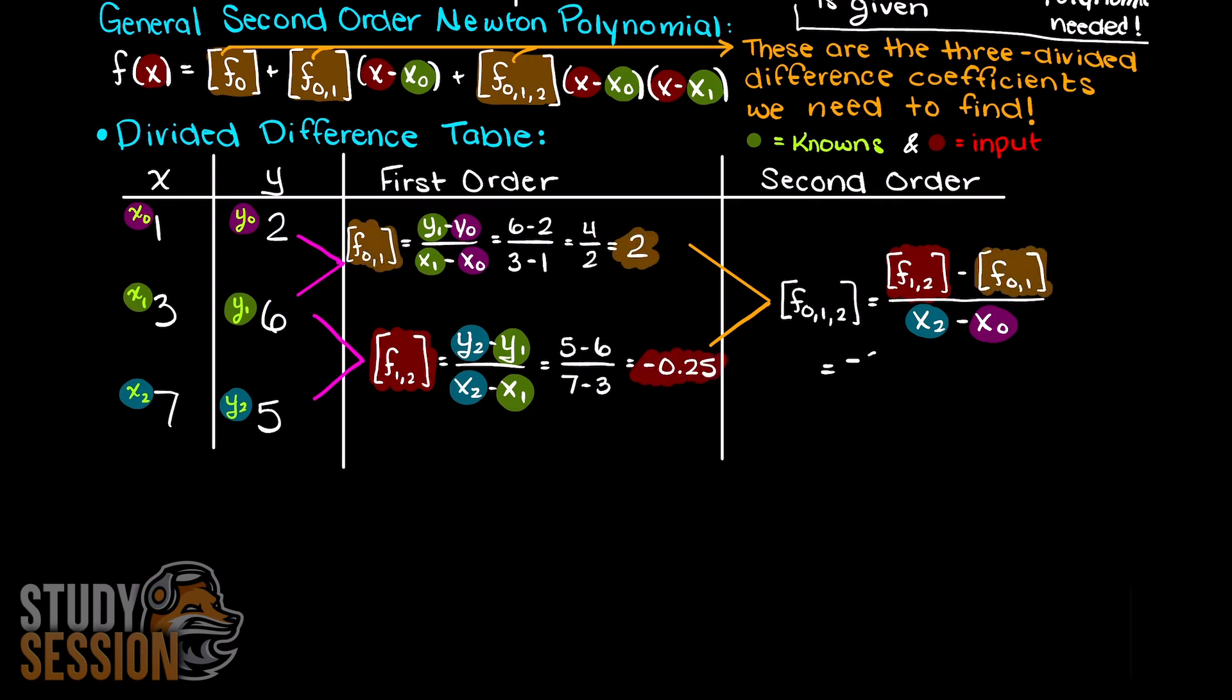Therefore after completing the math here we have minus 0.375. As you can see we now have our three necessary coefficients. Remember, we learned in the theory video that f0 is simply y0.